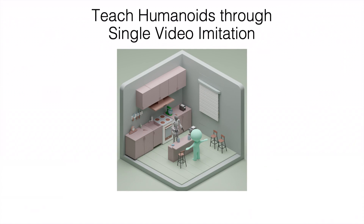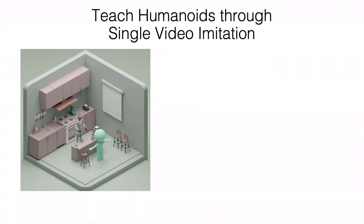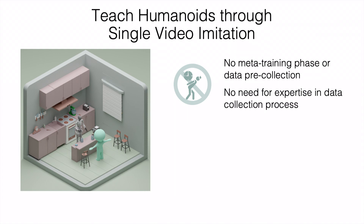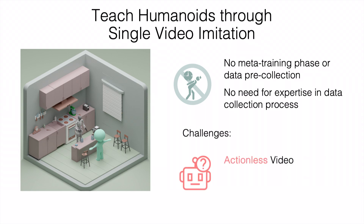Motivated by this study, we envision a future where humans and humanoids live together, and anyone can teach their humanoid a new task face-to-face using just a single video recording. In such a setting, it is almost effortless to teach robots new skills, since no meta-training or data pre-collection is needed, and no expertise is required because no control devices are involved. However, this brings great challenges: first, the videos are actionless, meaning there are no ground truth actions for the policies to regress to, so you cannot use the common imitation learning pipeline. Also, it only requires a single demonstration, so the common imitation learning paradigm does not work here.